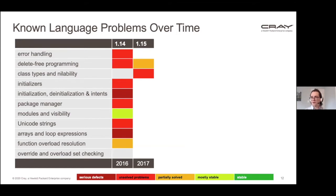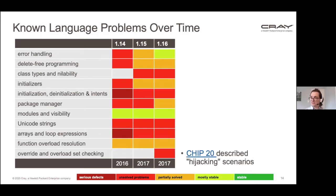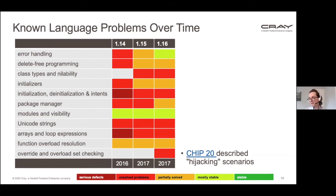So in 1.15 we made good progress on initializers and error handling, but there's still a lot of work to do. In 1.16 we made good progress on error handling that looked mostly okay, and some progress on the package manager. On the bottom row, we explored scenarios where libraries changing could cause unexpected behavior in an application, and we figured out there are things the language should do to help prevent that — so that section became an issue.